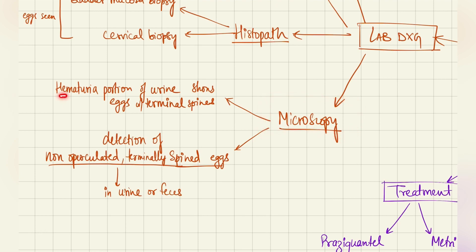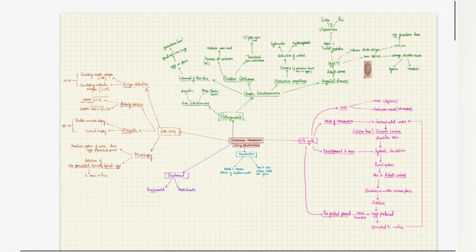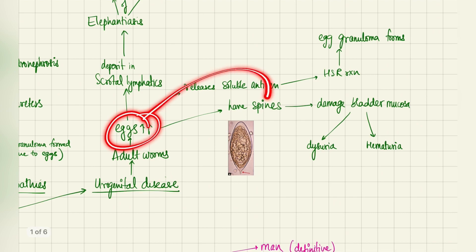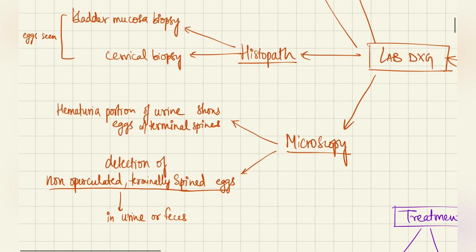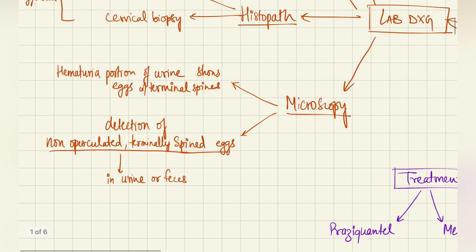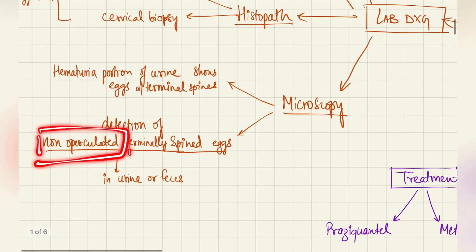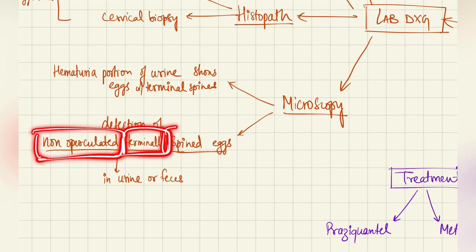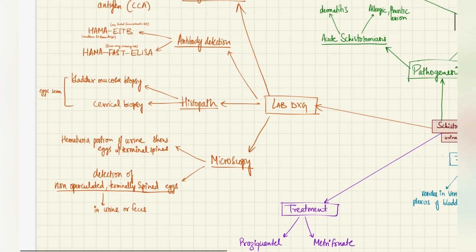Finally, coming to the microscopy, the hematuria portion of the urine will show eggs with terminal spines as discussed earlier in the pathogenesis. Eggs will have spines. So this is what will be observed in the microscopy, that the hematuria portion will show eggs with terminal spines. This is the urine analysis. Also, there will be detection of non-operculated terminally spined eggs in the urine or feces. This is characteristic. You have to remember this sentence: non-operculated terminally spined eggs in the urine or feces. So this is the microscopy.